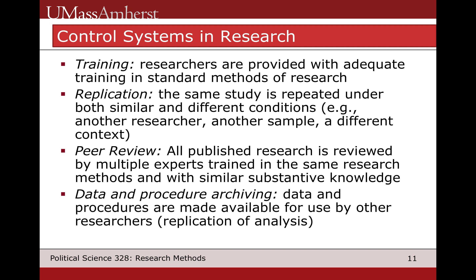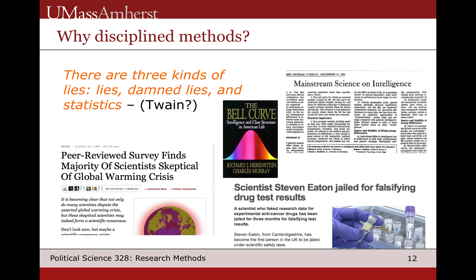The fourth important control system, which has become an increasingly important part of political science research in particular, is data and procedure archiving. What we mean is that if one goes out and collects a unique set of data or analyzes data, you actually keep these analysis procedures and make them available for use by other researchers. Part of what we'll be practicing in the later portion of the class, when we start to look at statistical software, is how we can keep a record of what we've done in a syntax file that we can make available to other researchers.